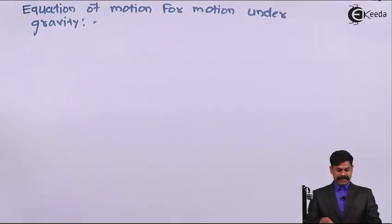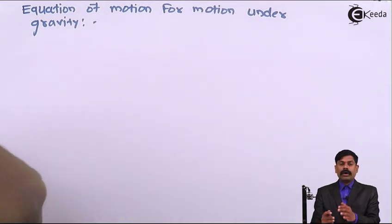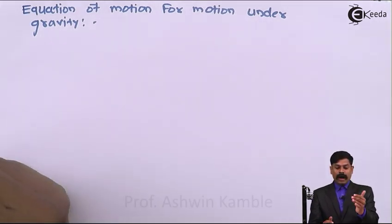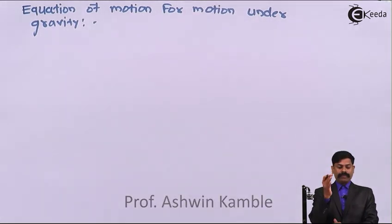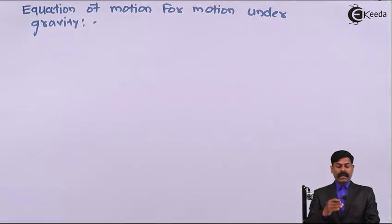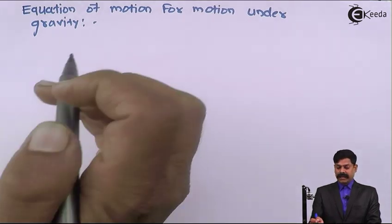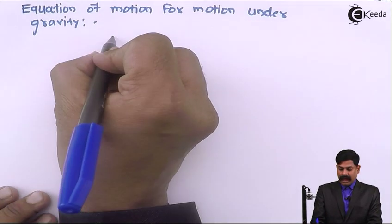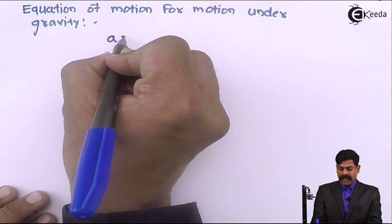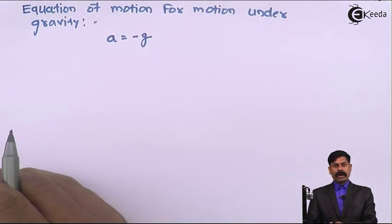Hello friends. If we take vertical upward as the positive y axis, acceleration is along the negative y axis, then we can write here acceleration a equals to minus g.